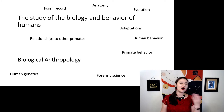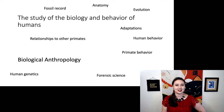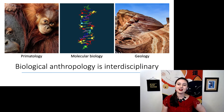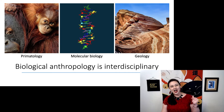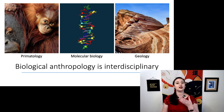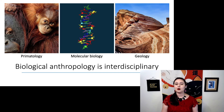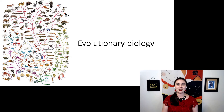We can also look at other primates — their behavior or how we're related to them. We can also look at genetics, and there are a lot of applications to this, including forensics and criminal cases. Biological anthropology is highly interdisciplinary. We pull from primatology, molecular biology, and geology to interpret the fossil record. But the one field we pull the most from is evolutionary biology.